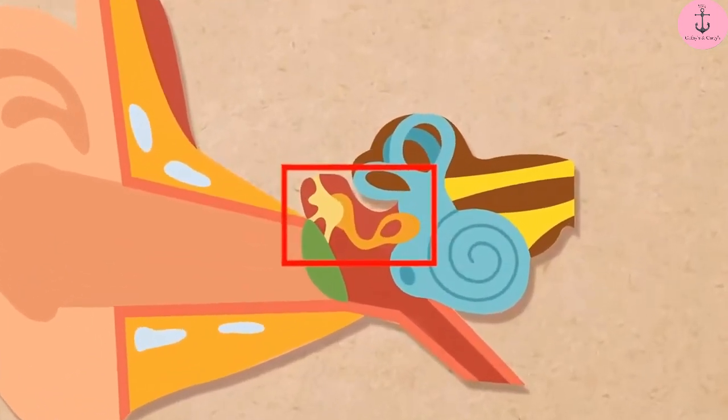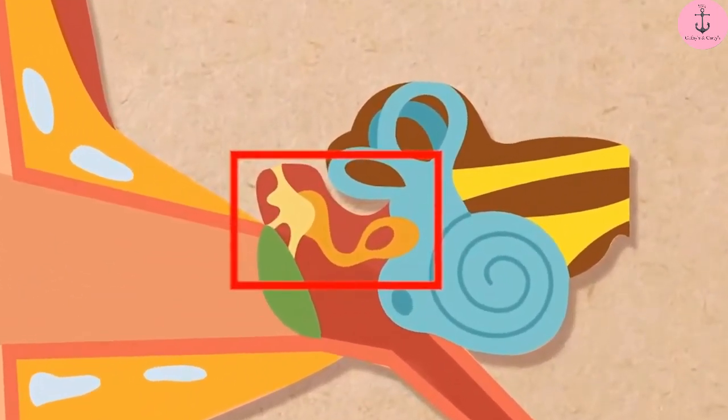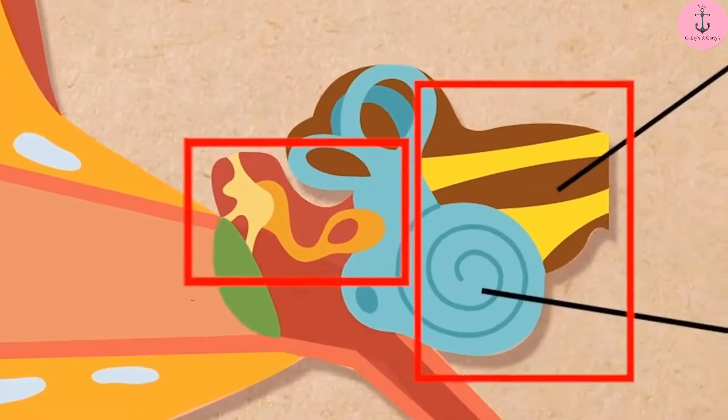After that, the middle ear transmits the amplified pressure variations received from the sound wave to the inner ear.